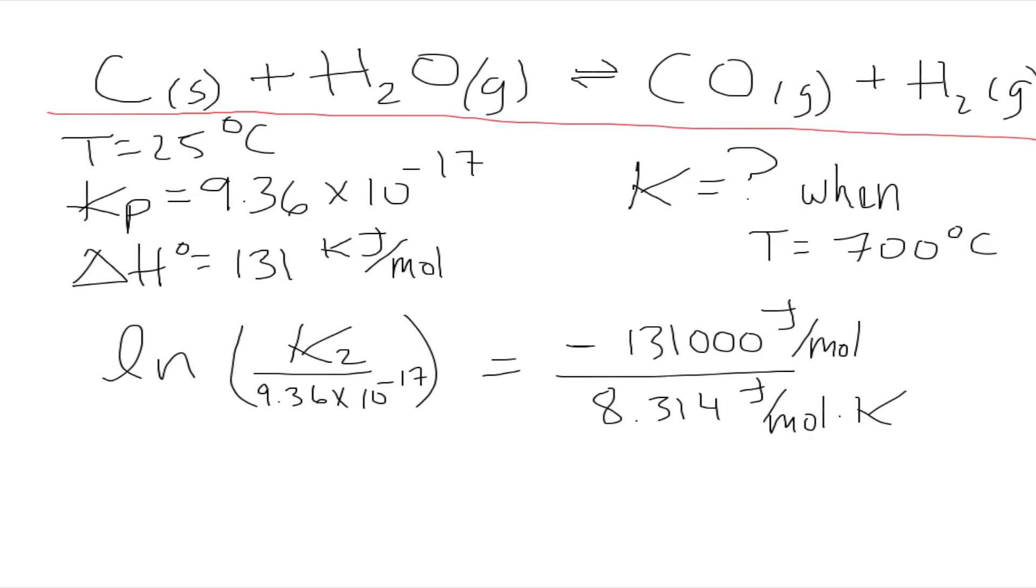And then we will get that this is all times 1 over 973 Kelvin, that's temperature 2, minus 1 over temperature 1 which is 298 Kelvin. This goes right here.